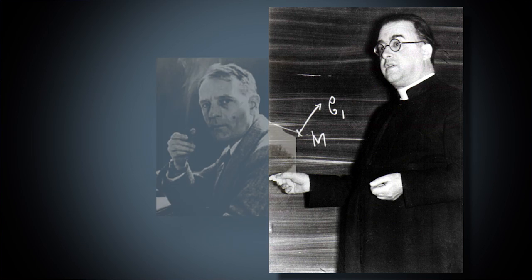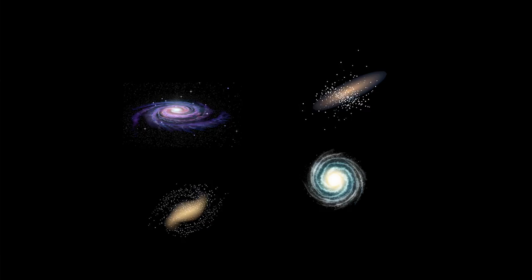He didn't realize the implications of his find until others began to propose explanations for what he had observed. What he saw could have been explained as the result of galaxies randomly flying away from us, but that didn't seem to be the most logical explanation. So what could it be?